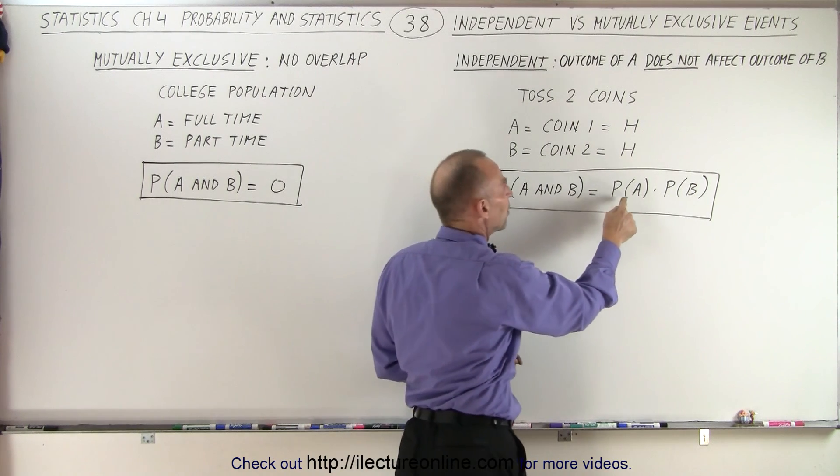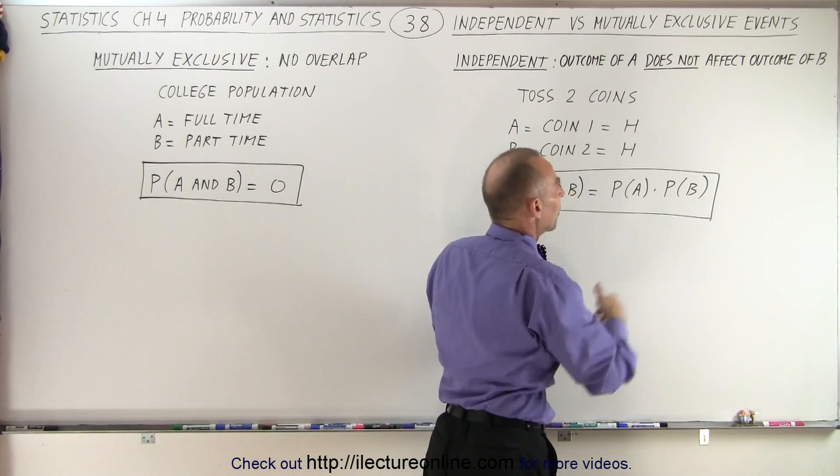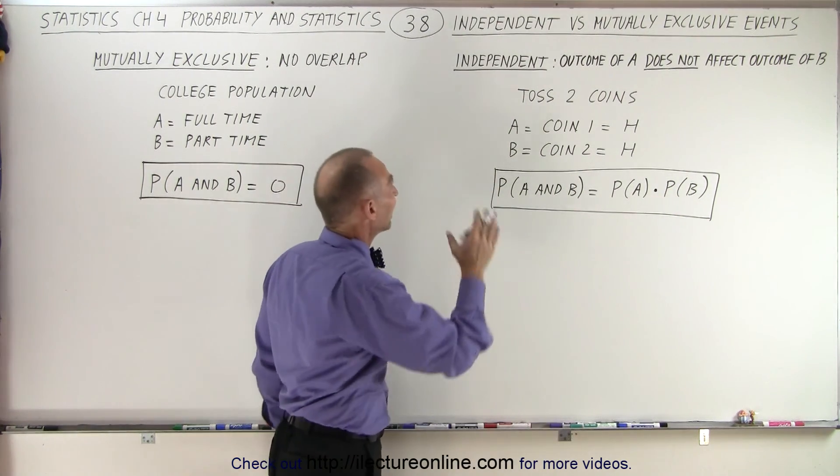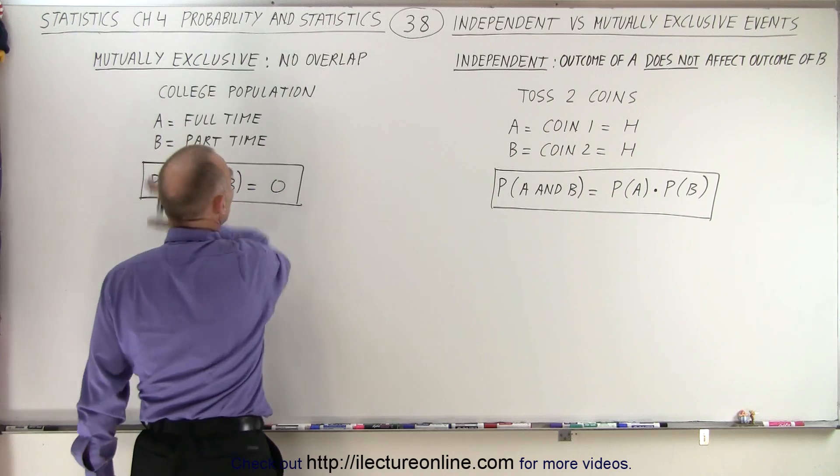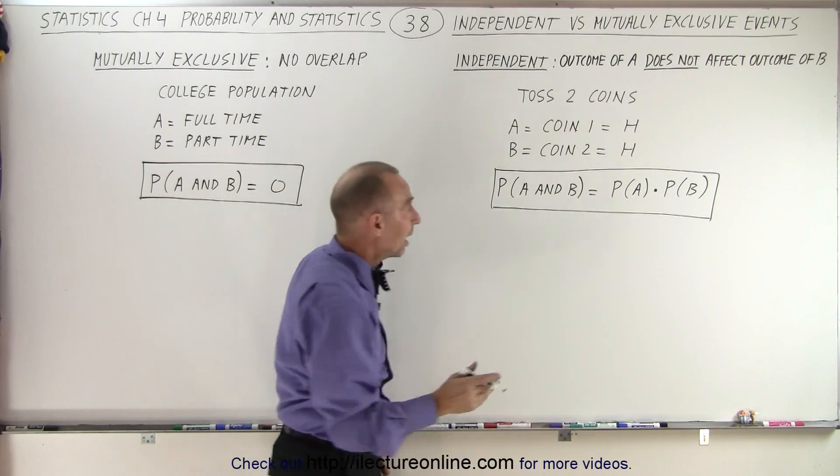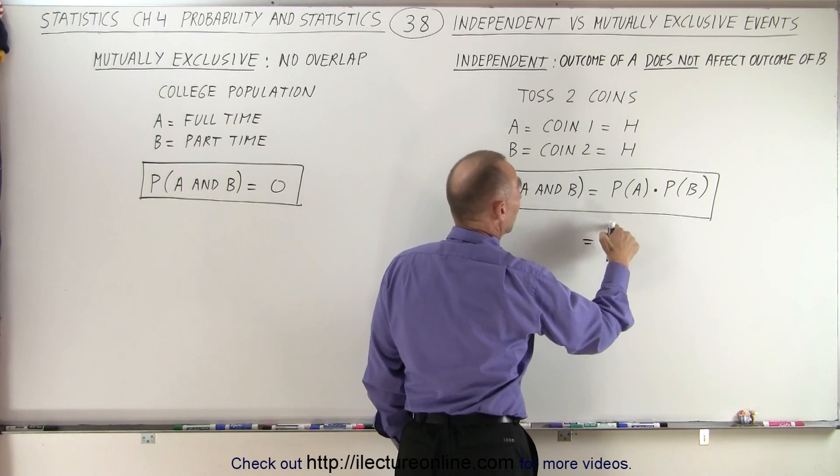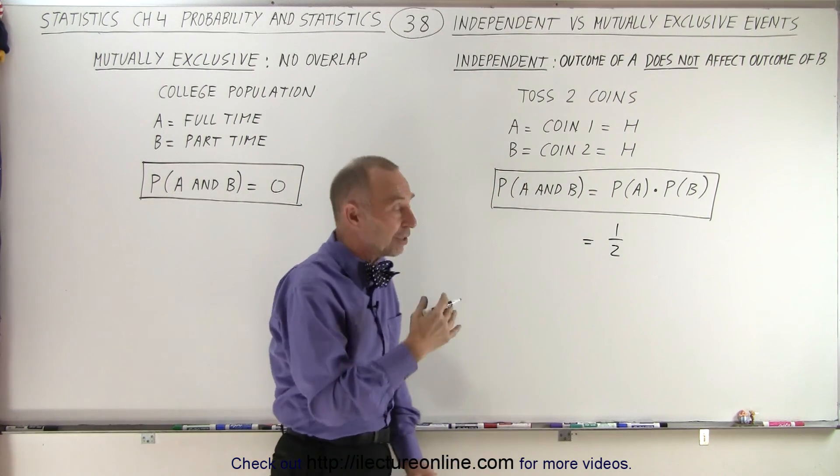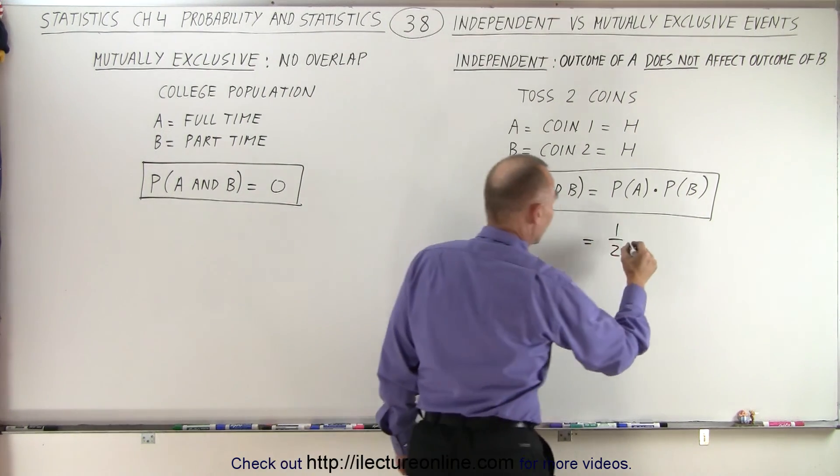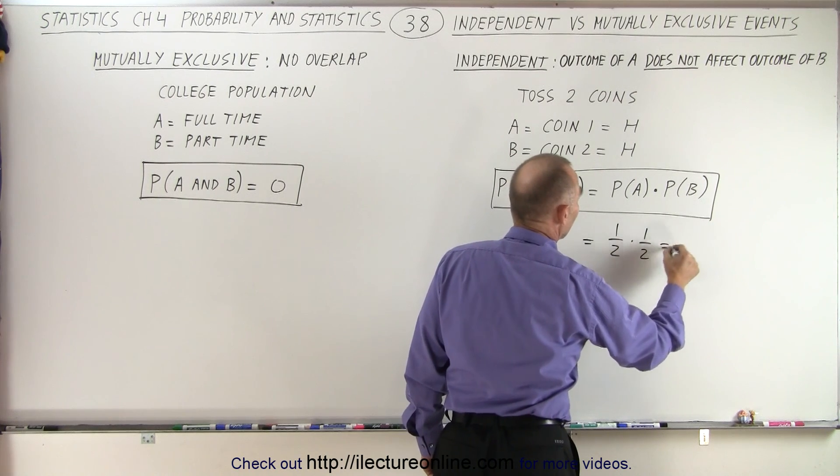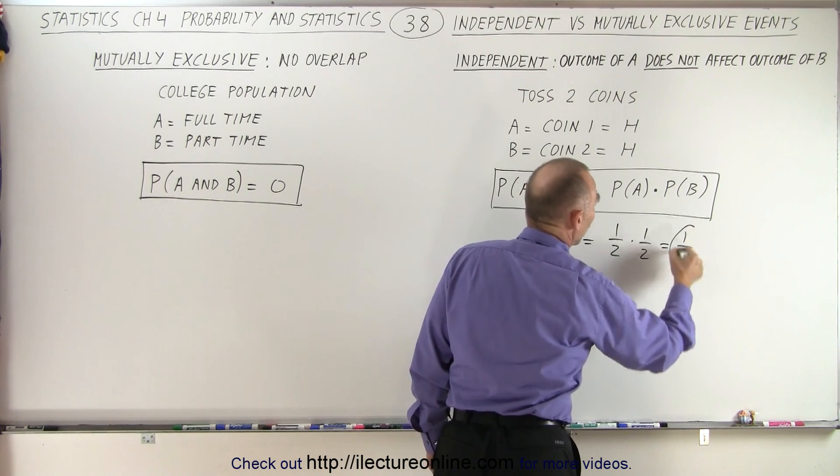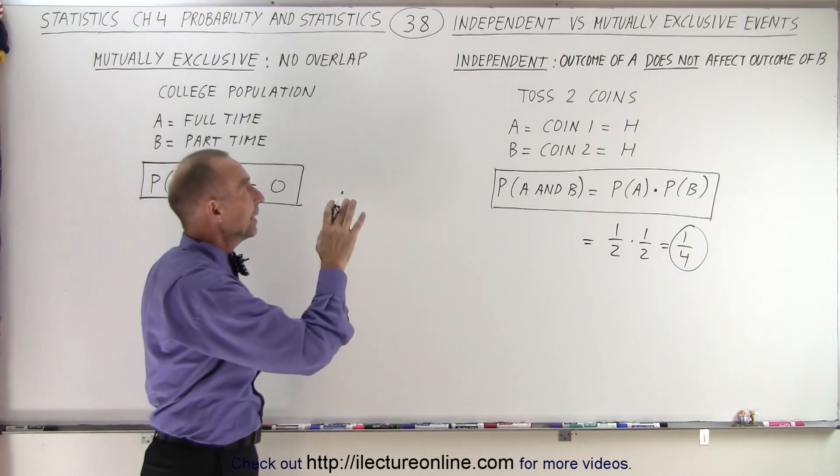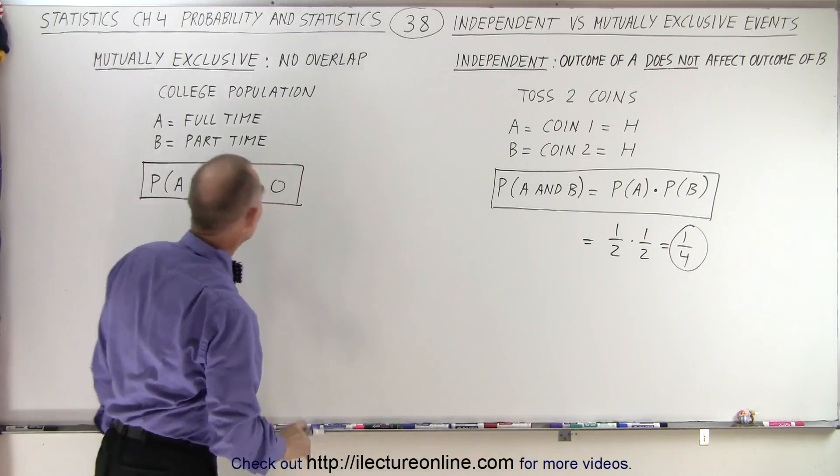Then when we look for the probability of A and B, that is equal to the probability of A times the probability of B. Therefore, we get a very different result if they're independent versus if they're mutually exclusive. In this case, that would be equal to the probability of A, which is one-half because it's 50-50 whether or not you get heads or tails. The same for B, that would also be one-half. And so therefore, that would be one-quarter—the probability of A and B occurring when they're independent is one-quarter in this case.